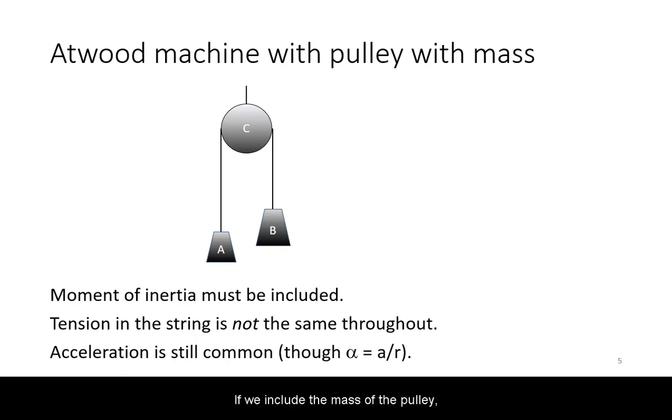If we include the mass of the pulley, then we must account for its moment of inertia and all other rotational quantities such as torque and rotational kinetic energy. You can no longer assume that the tension in the string is the same throughout, but you can still simplify the equations through the common acceleration of the system.